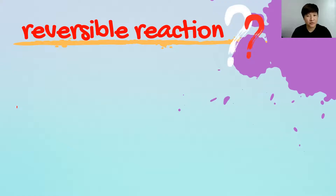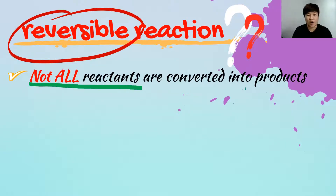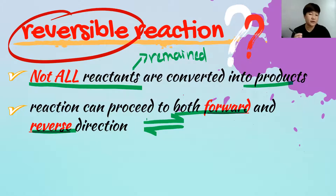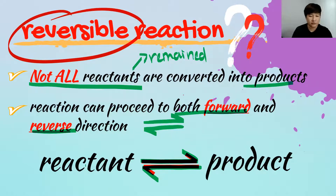What is a reversible reaction, and what makes it different? A reversible reaction means not all reactants are converted into product — there will still be reactant remaining at the end. The reaction can proceed in both the forward and reverse directions, shown by a double-headed arrow, meaning reactant can change to product and product can also change back to reactant.